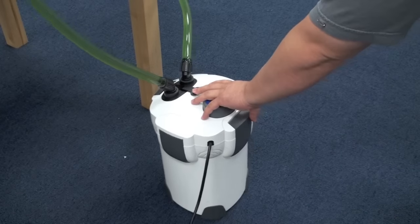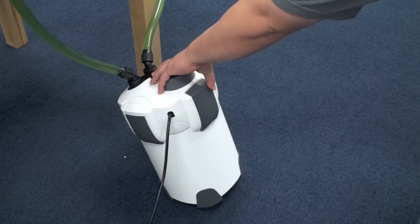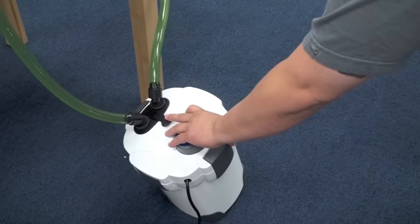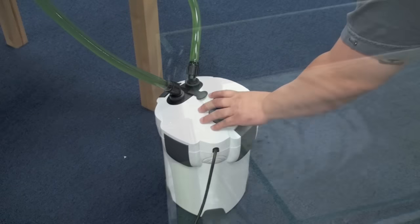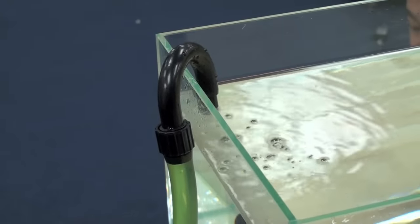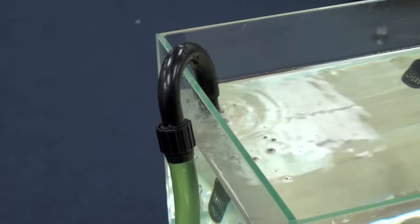After your canister filter is primed, gently tilt it front to back, then side to side. This will release any trapped air inside your canister filter, which may be affecting your flow rate.